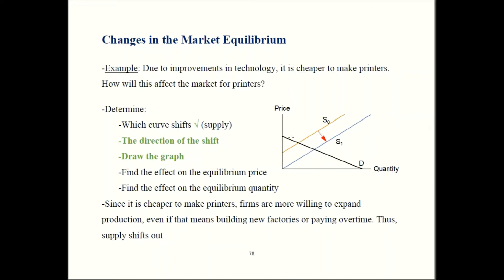Here's demand and here is the original supply curve, S0. Once supply shifts out, we move to S1. That's our graph. The next step is to find how equilibrium price and equilibrium quantity are affected. Equilibrium is where supply meets demand — that used to be up here, so that was our old price. Once supply shifts out, that's going to be down here, so prices are going to go down.